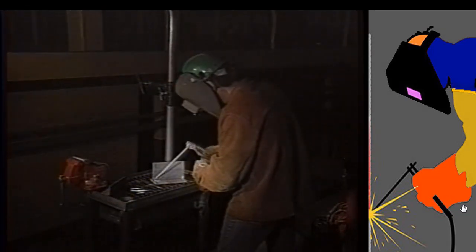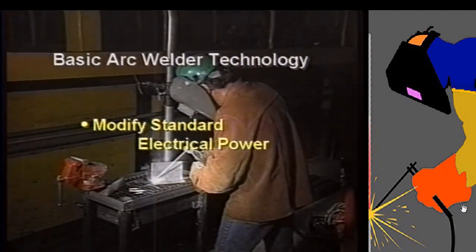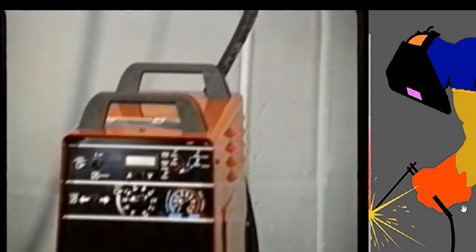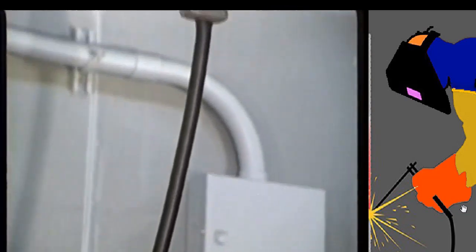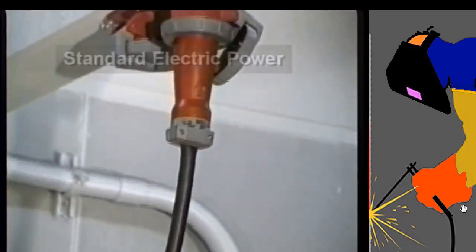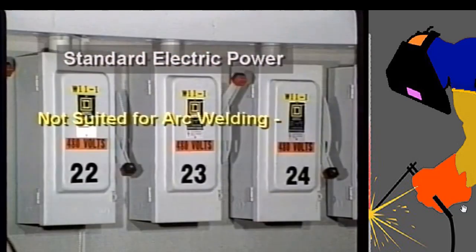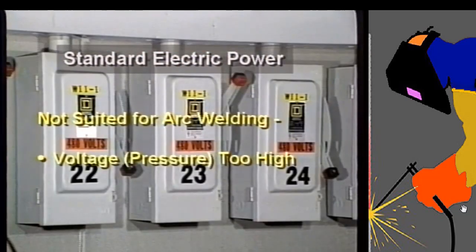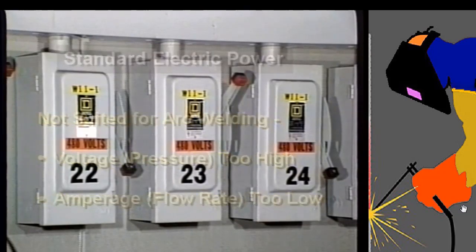All arc welders are basically devices that modify standard electrical power — similar to what we use every day — into a form suitable for welding. Many electric arc welders use an alternating current AC industrial power source. But standard electrical power is not suitable for arc welding: its voltage, or pressure, is too high, but its amperage, or flow rate, is too low.